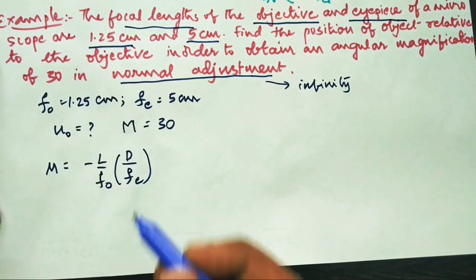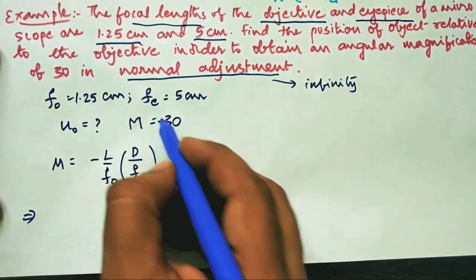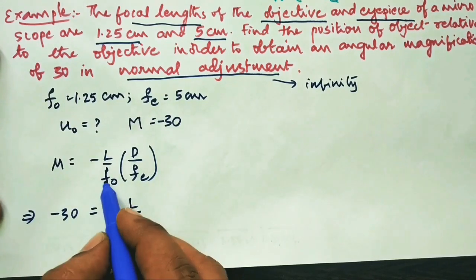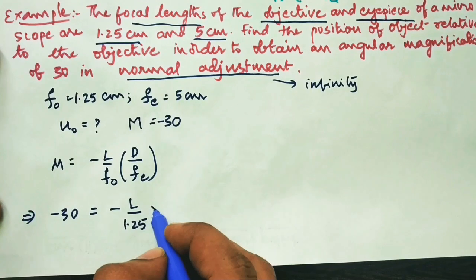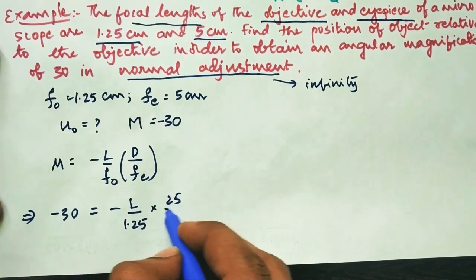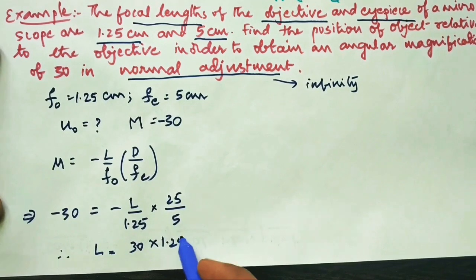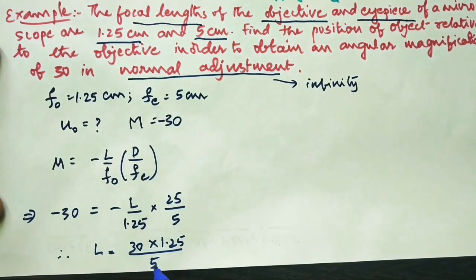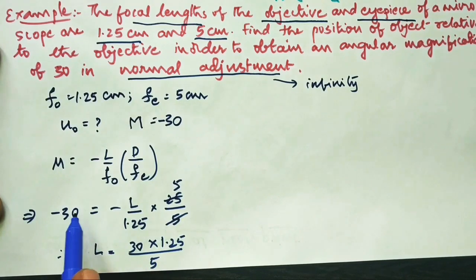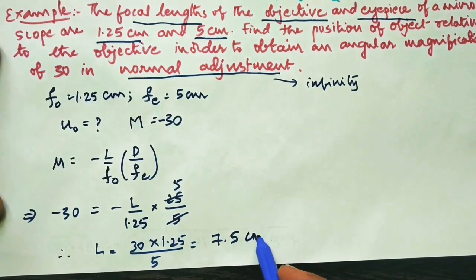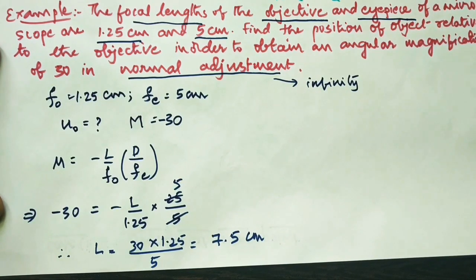When the image is formed at infinity, magnification M = −(L/f_o) × (D/f_e). Taking magnification as −30 (negative because the final image is inverted): −30 = −(L/1.25) × (25/5). Rearranging, L = 30 × 1.25 / 5 = 7.5 centimeters.